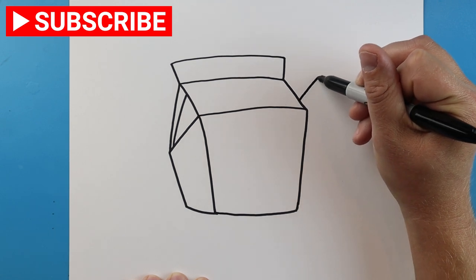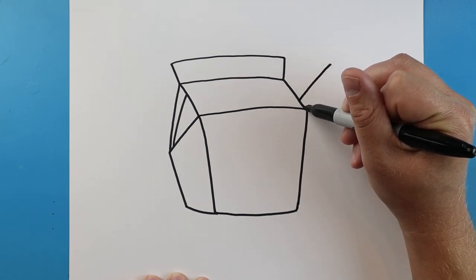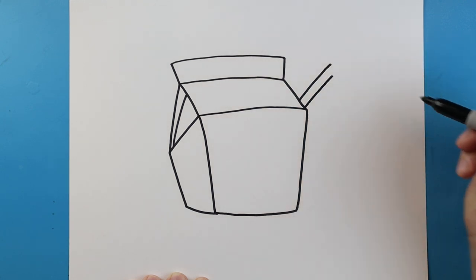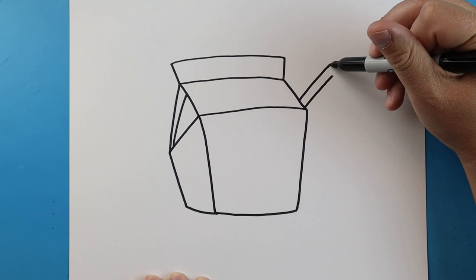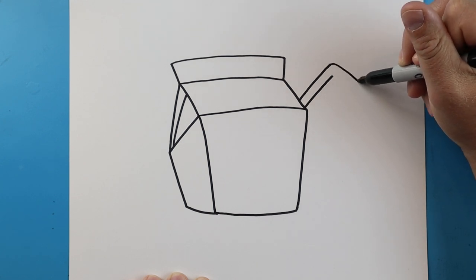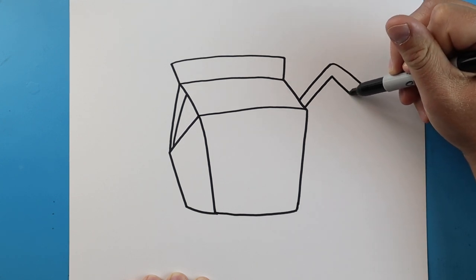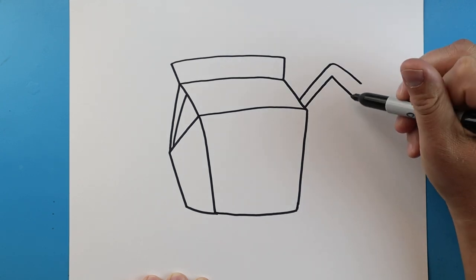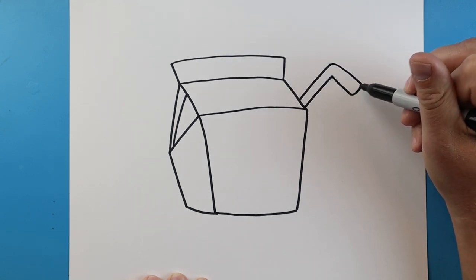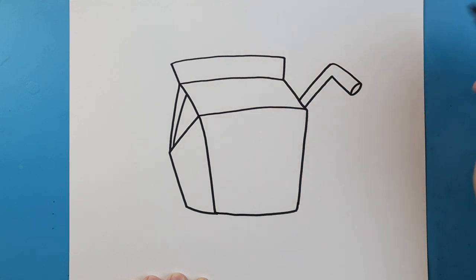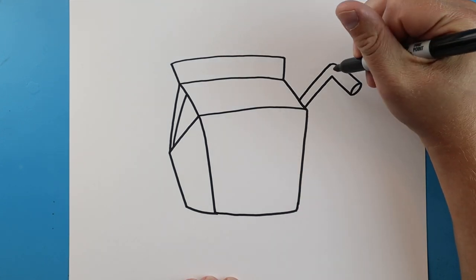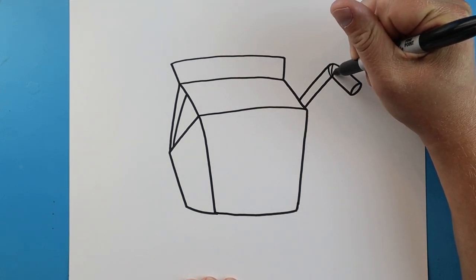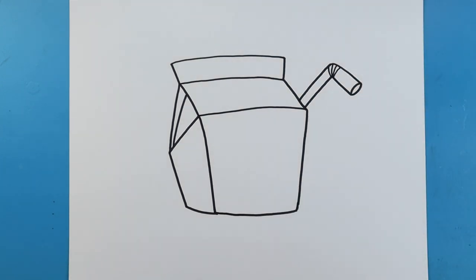Starting here, make a line that goes up with another one that goes up to make the straw. Draw a line that comes down and another one that comes down. Then connect it with a curve and another little curve here in a little oval shape. I like to add a couple little lines that come up to show where the straw bends.